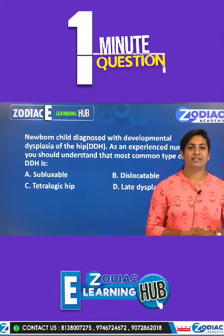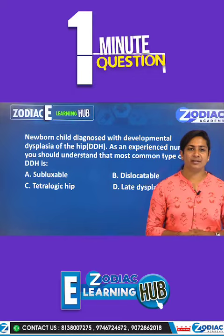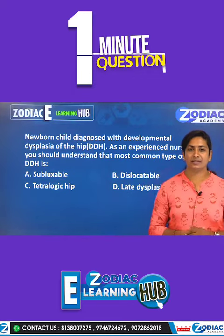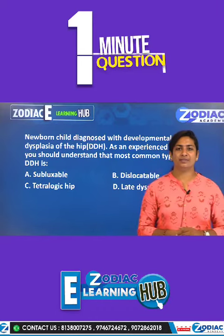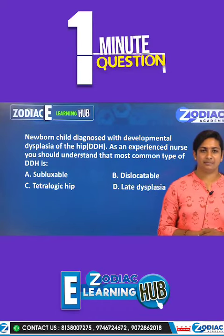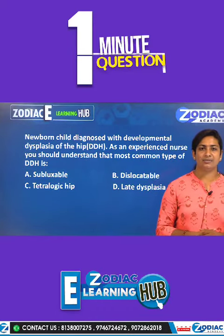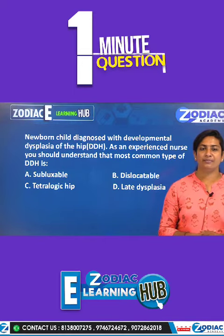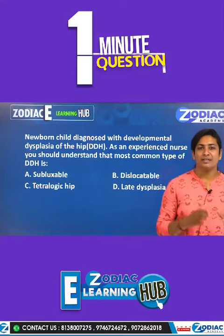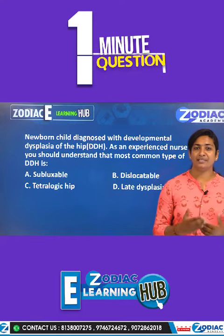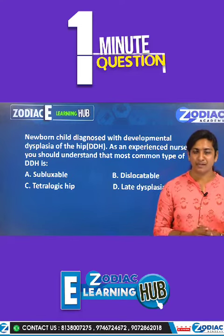Good morning learners, welcome to Zodiac E-Learning Hub. This is a question from pediatric nursing: a newborn child is diagnosed with developmental dysplasia of the hip (DDH). As an experienced nurse, you should understand that the most common types of DDH are subluxable, dislocatable, tautologic hip, and late dysplasia. DDH means developmental dysplasia of the hip, where dysplasia refers to abnormal growth of cells in the tissue.